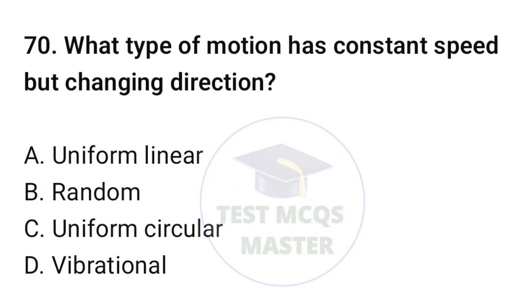Question number seventy: what type of motion has constant speed but changing direction? The correct option is C, uniform circular motion.